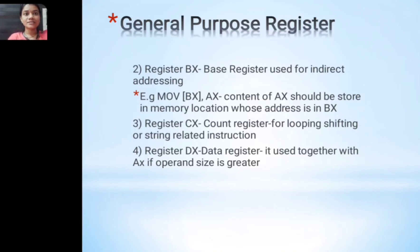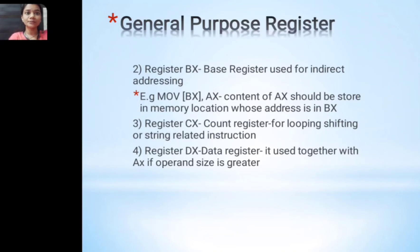The DX register can be used together with AX when the operand size is large. For example, when multiplying 16-bit data, the result can be 32-bit, which cannot fit in AX alone. So DX is used alongside AX to store the data when the operand length is high. This is the main use of the DX register.